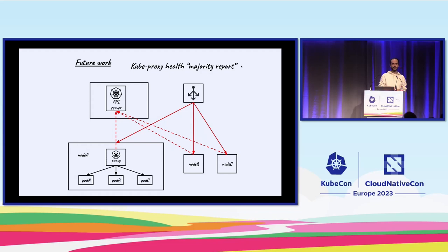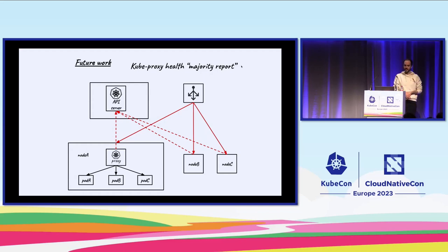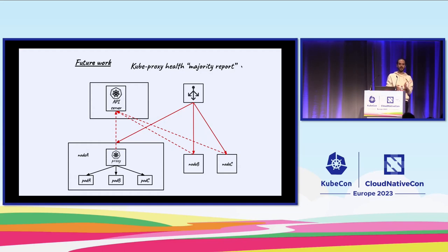Another problem we'd like to solve is something denoted the majority report. Service proxies today configure the network by watching services and endpoints, but what happens if there's an issue reading from the API server? In the case of kube-proxy, it will deem itself unhealthy because it hasn't updated the iptables rules within the timeout period it defines — and whenever the health check starts failing, cluster-wide ingress is impacted.